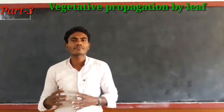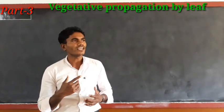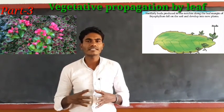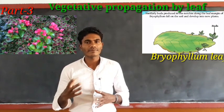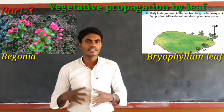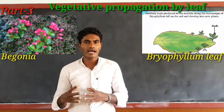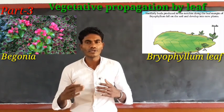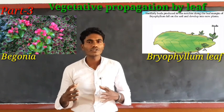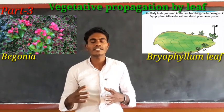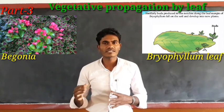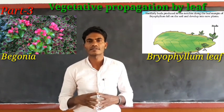Now you can see on your screen: vegetative propagation by leaves. You may have seen that Bryophyllum plants and Begonia plants are produced by their leaves. Please look at the information about vegetative propagation on your screen. Vegetative propagation is the method by which new plants are grown from leaves.